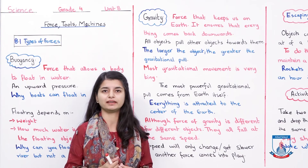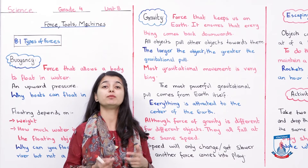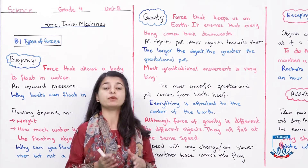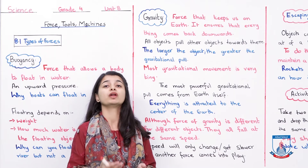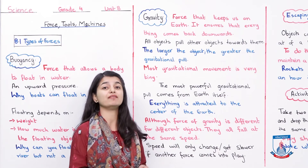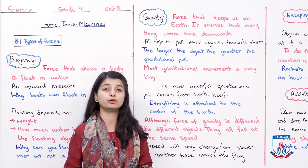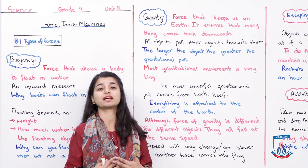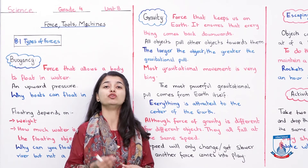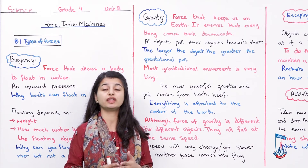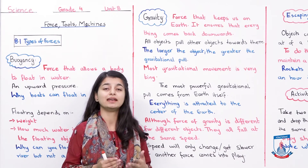So the two types of forces we've covered are: first, buoyancy — an upward pressure that depends on the object and how much water it displaces; and second, gravity — a downward pull, with the main gravitational force coming from the center of the Earth. All objects fall at the same speed unless friction, air resistance, or another force acts on them.